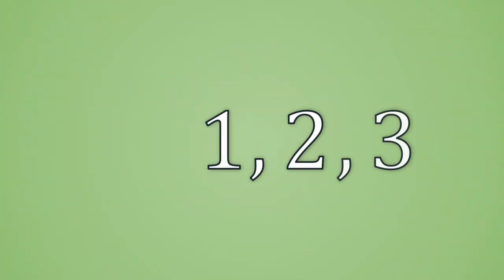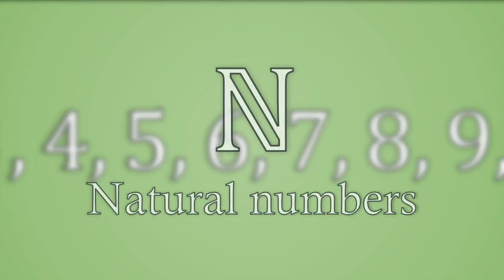You've probably heard about numbers like pi, the square root of 2, or e, but certainly the first numbers you've known since childhood are 1, 2, 3, and so on, which are what we call natural numbers.